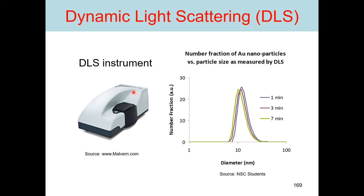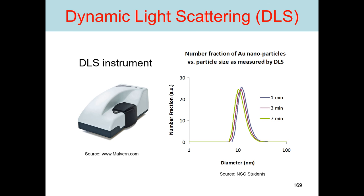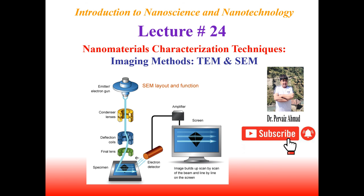This is the outer look of the DLS instrument. This is also a typical graph in which the number fractions of gold nanoparticles versus particle size measured by DLS has been plotted — number fractions on one axis and diameter of the particle on the other. That is all for DLS. Thanks for watching. In the next lectures, we will proceed toward imaging methods for nanomaterial characterization, including transmission electron microscopy and scanning electron microscopy. Stay tuned — see you next lecture, bye bye.